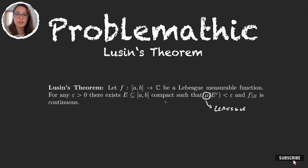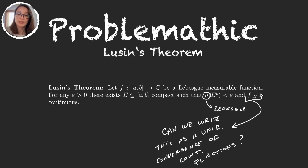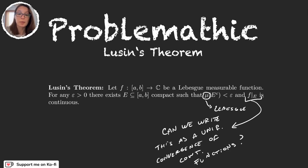But how do we prove this? We've been working in the last couple of videos with convergence of sequences, and there's no sequence in this theorem. The idea is: to prove that a function is continuous on E, we can think about writing this function as a uniform limit of continuous functions. We will try to find a sequence of continuous functions that converges to f uniformly on E, and that will immediately give us that the restriction of f to E is continuous. The uniform limit of continuous functions is always continuous, and that doesn't necessarily happen for any other type of convergence.